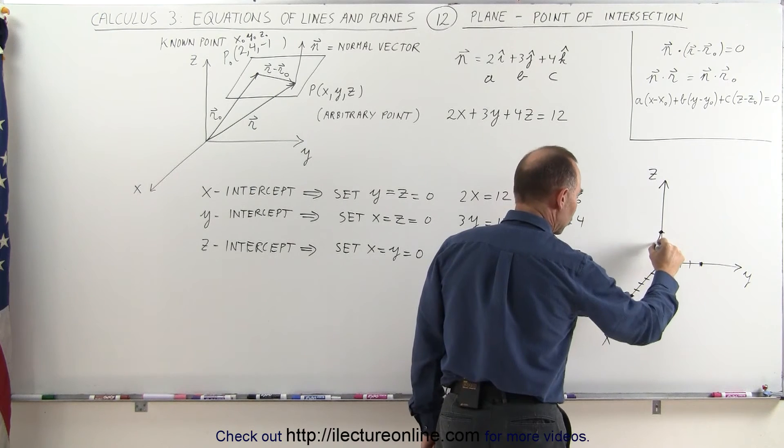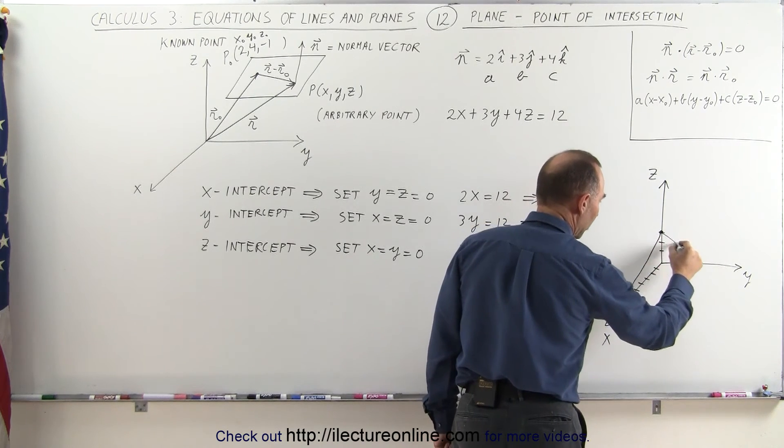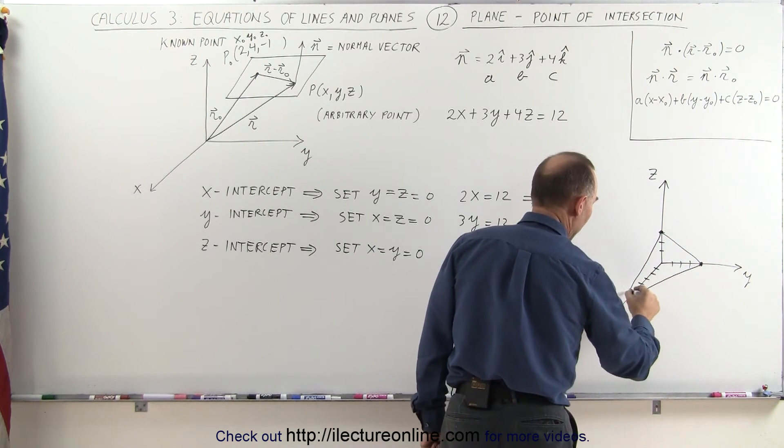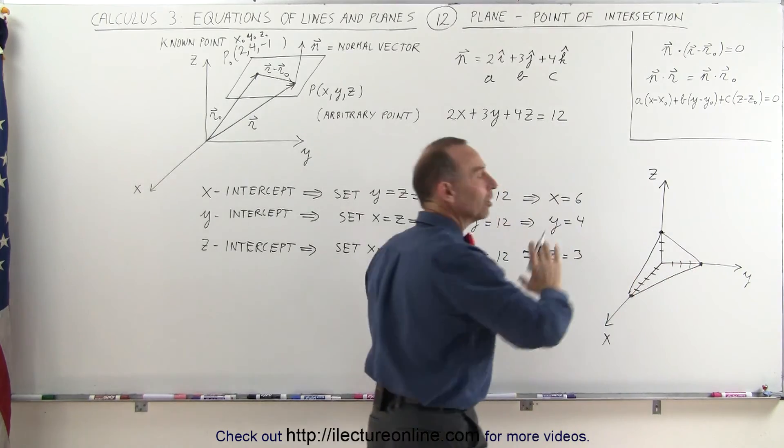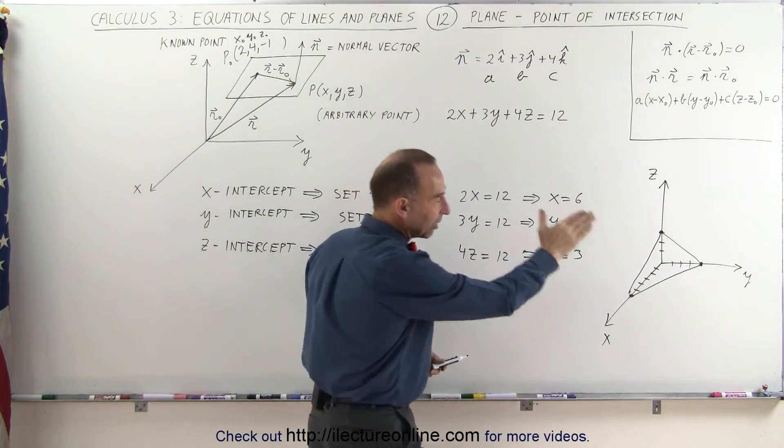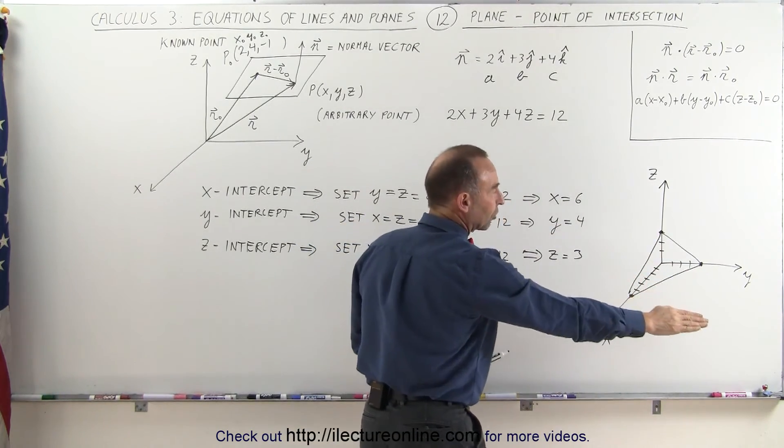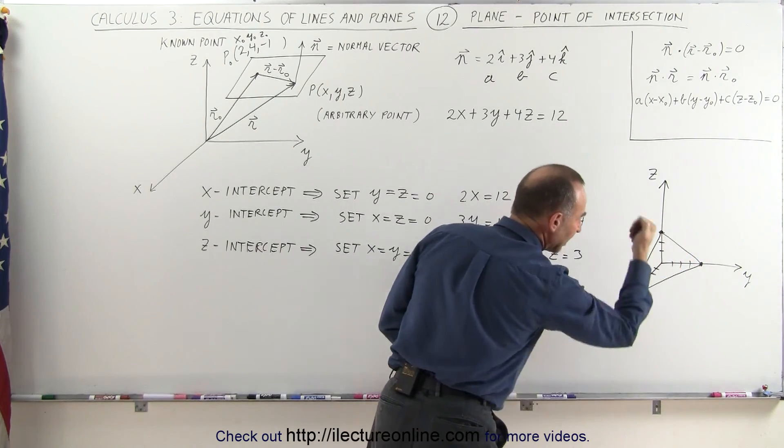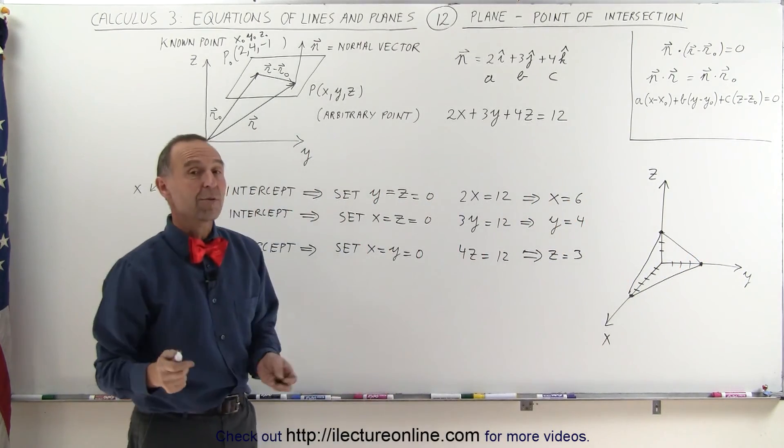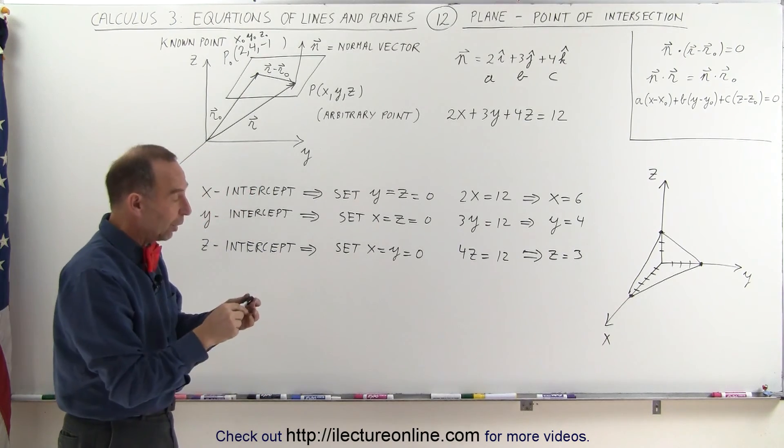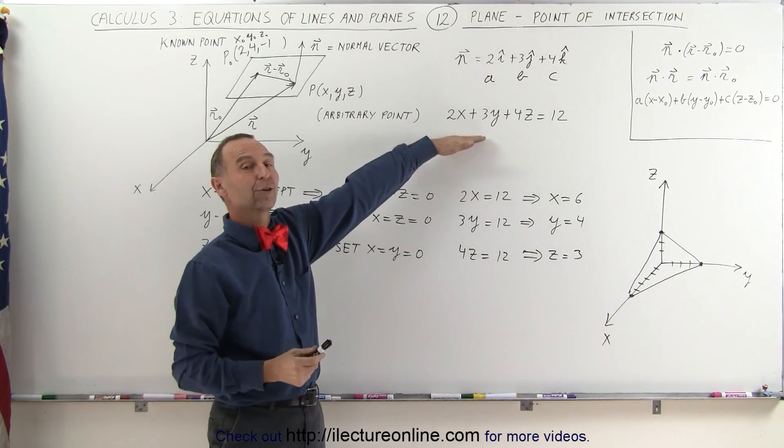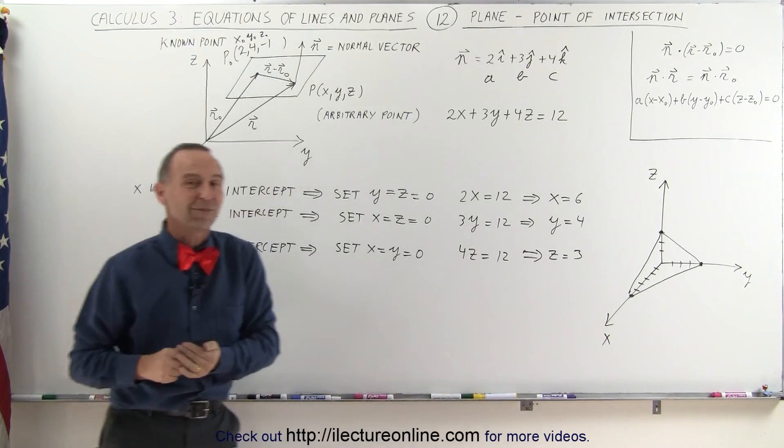Then if we draw a triangle connecting the three points, we now have a portion of the plane. You can see how the plane is angled. Notice it crosses the z-axis there, the y-axis there, and the x-axis there. And that's how we find the intercepts of a plane once you have the scalar equation.